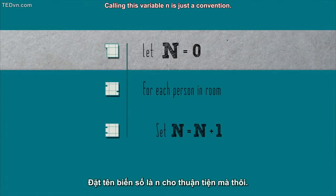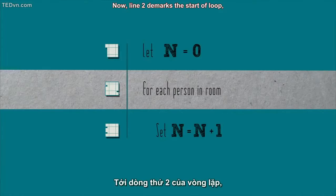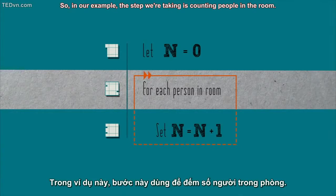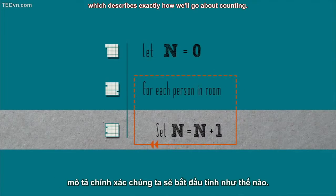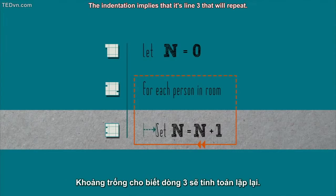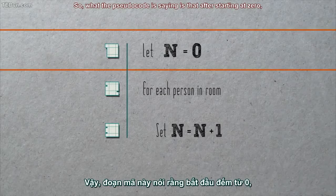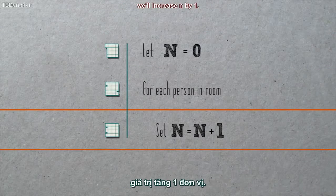Calling this variable n is just a convention — I could have called it most anything. Now, line two demarks the start of a loop, a sequence of steps that will repeat some number of times. So in our example, the step we're taking is counting people in the room. Beneath line two is line three, which describes exactly how we'll go about counting. The indentation implies that it's line three that will repeat. So what the pseudocode is saying is that after starting at zero, for each person in the room, we'll increase n by one.